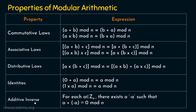The last property is the additive inverse. For each a belonging to Z₁₀, if there exists −a in the set such that a + (−a) mod n equals 0 — the identity element for addition — then there exists an additive inverse. Similarly, if a × a⁻¹ gives 1 mod n, then there exists a multiplicative inverse, because 1 is the identity element for multiplication. These are all the various properties of modular arithmetic.